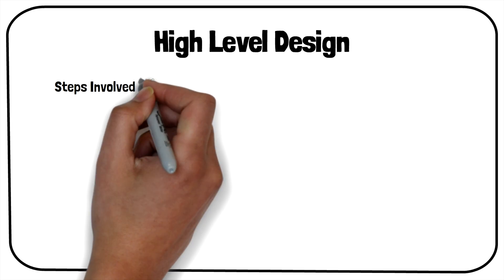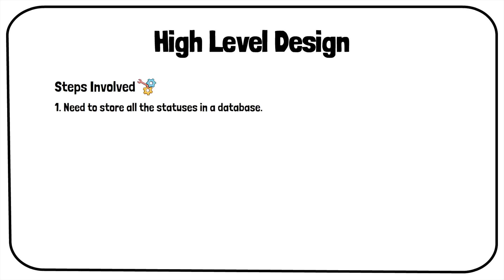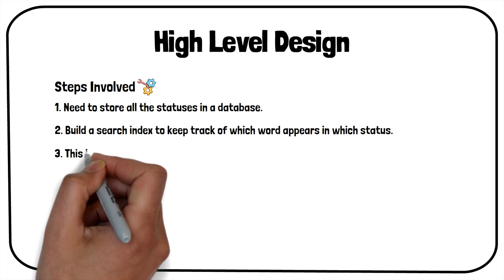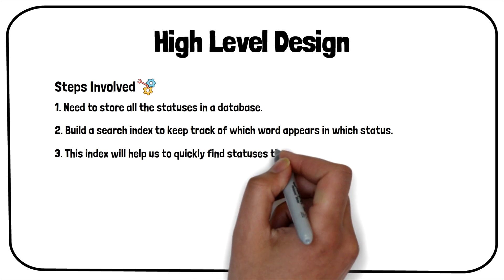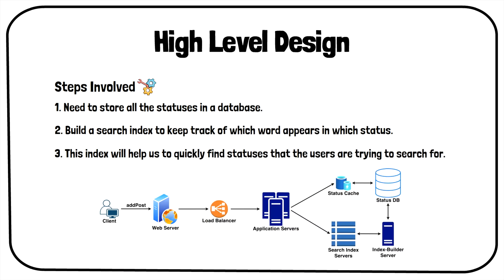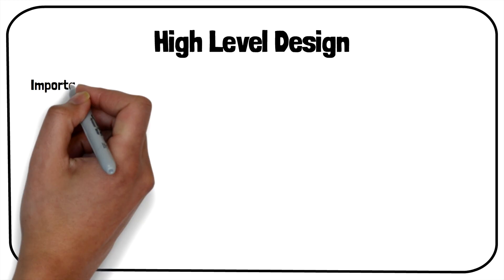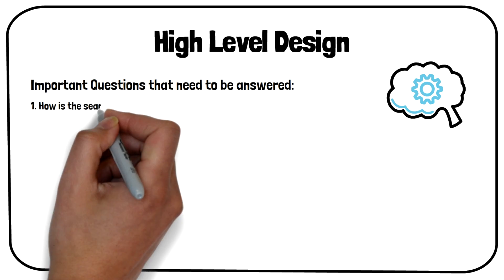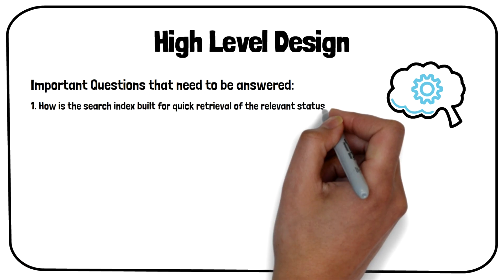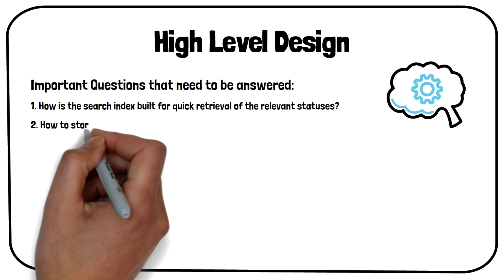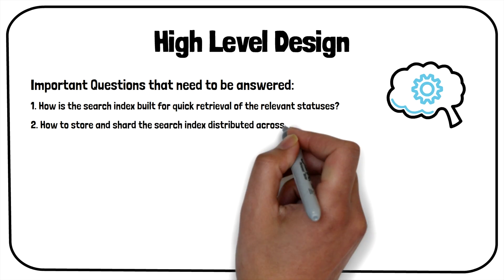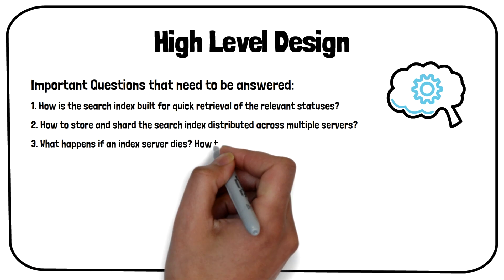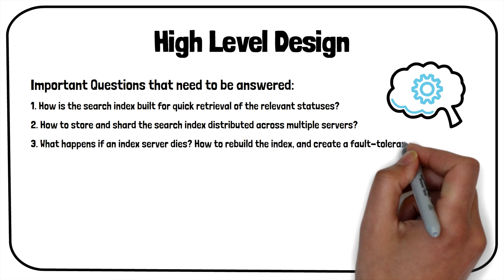At the high level, we will need to store all the statuses in a database, and also build an index that can keep track of which word appears in which status. This index will help us to quickly find statuses that users are trying to search for. Some important questions that need to be answered are: How is the search index built for quick retrieval of the relevant statuses? How to store and shard the search index distributed across multiple servers? And what happens if an index server dies — how to rebuild the index and create a fault-tolerant design?